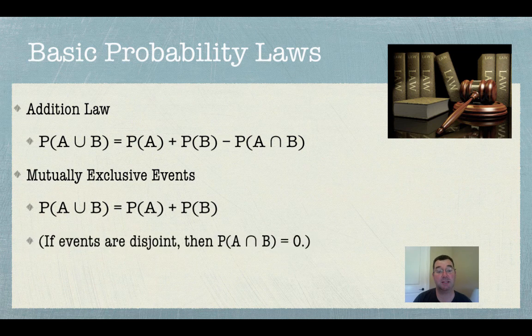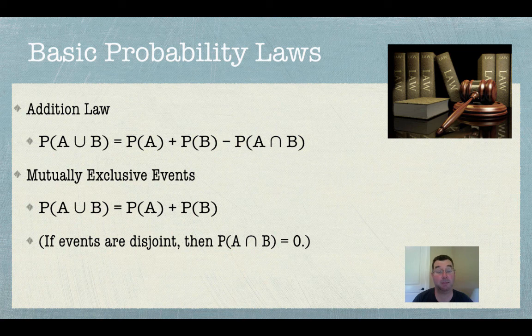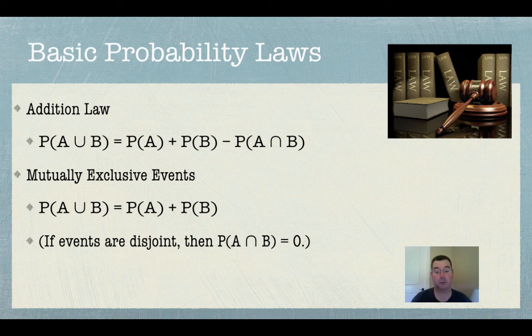Mutually exclusive events are such that the probability of A or B is just the probability of A plus the probability of B. There is no probability that they'll both happen because that's the definition of being mutually exclusive. They're disjoint. There's no overlap, so the probability of any overlap is zero, so I don't need to worry about it.